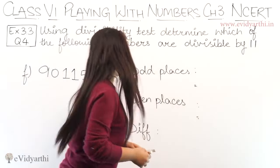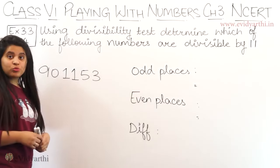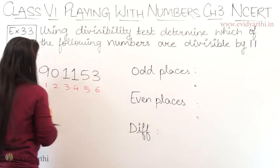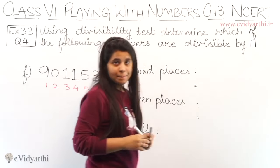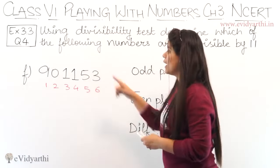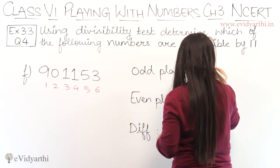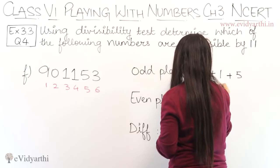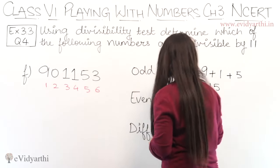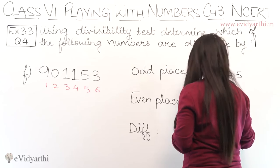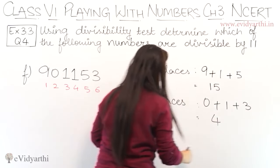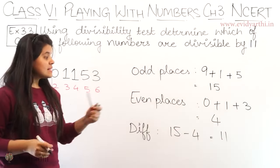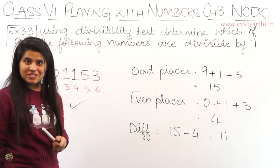Coming to the F part. The number is 901153. So, we will mark the positions: 1, 2, 3, 4, 5, 6 — we have 6 digits. The odd place digits are 9, 1, and 5. Adding them: 9 plus 1 is 10, plus 5 is 15. The even place digits are 0, 1, and 3. Adding them: 3 plus 1 is 4. Now, the difference is 15 minus 4, which is 11. Since the difference is 11, this entire number is divisible by 11.